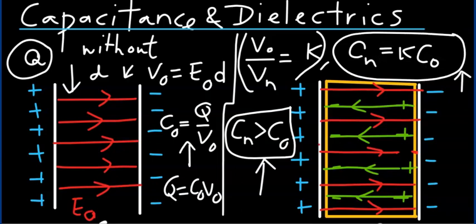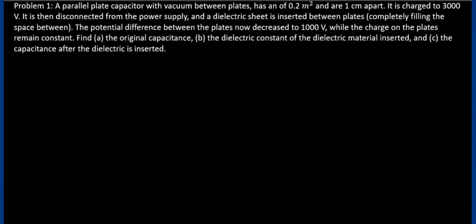This states that the capacitance of a capacitor with dielectric constant K in between the plates is larger than the capacitance of the same capacitor with vacuum in between the plates. Let's look at the following problem.